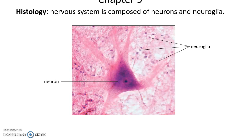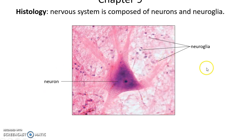In histology, if you look at a bit of nervous tissue, you will see a neuron — a very large cell with lots of processes coming off of it — and also many, many smaller cells called neuroglia. Here we can see the nucleus of many of these neuroglia.